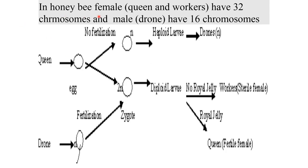In the case of a honeybee, the female — queen and worker — have 32 chromosomes, whereas the male (drone) has 16 chromosomes. The queen produces an egg gamete that fuses with a drone sperm to form a diploid zygote, which becomes a larva. If there is no royal jelly, the larva will become a worker (a sterile female). If there is royal jelly, the larva will become a queen (a fertile female). If the queen produces a zygote without fertilization, it will produce a haploid larva that will become a drone — that is why drones have 16 chromosomes, whereas the queen and worker (sterile female) have 32.